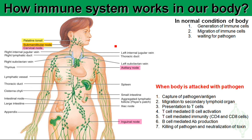In the normal state we produce a lot of cells from our lymphoid organs. There are two types of lymphoid organs: the primary lymphoid organ and the secondary lymphoid organ. The primary lymphoid organs are the bone marrow and the thymus, and the secondary lymphoid organs include the spleen, lymph nodes, Peyer's patches in the intestine, tonsils, and adenoids.